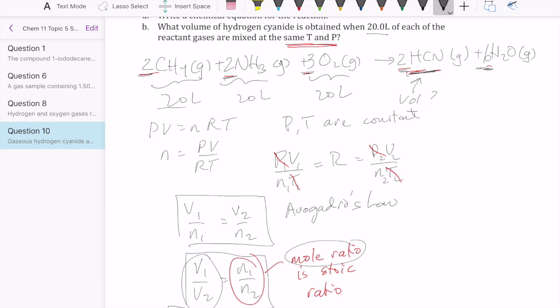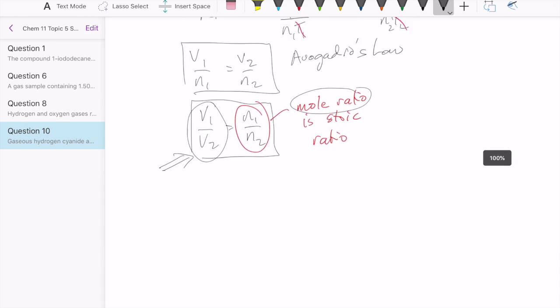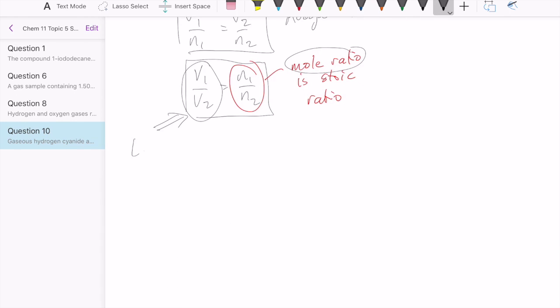And so that makes life really easy because if I want to figure out how much HCN I have, all I need to do is first figure out which of these three guys is my limiting reactant. And then afterwards, I'm going to use the limiting reactant to calculate the product that I have. So let's start by figuring out the limiting reactant.